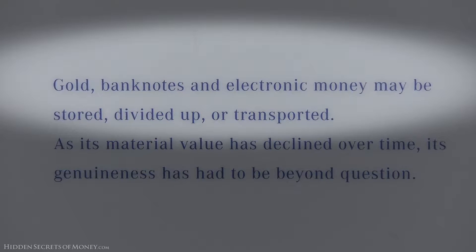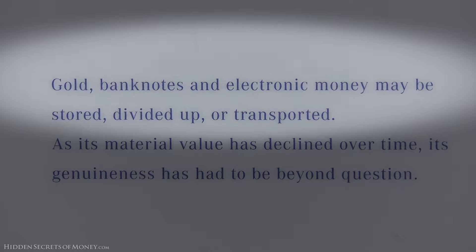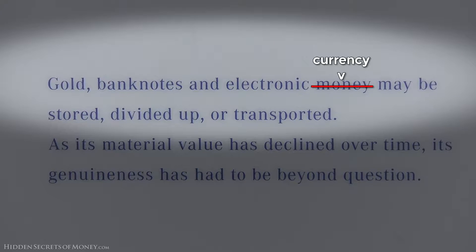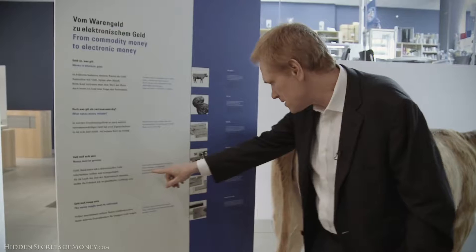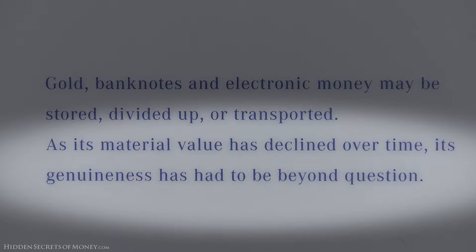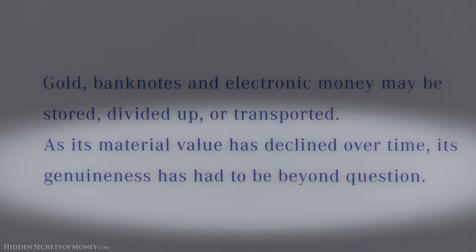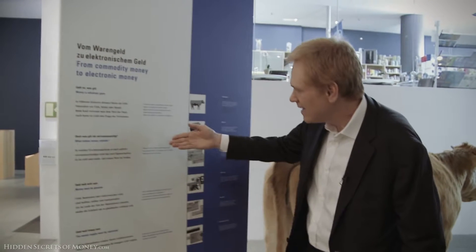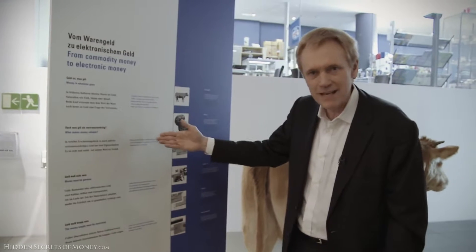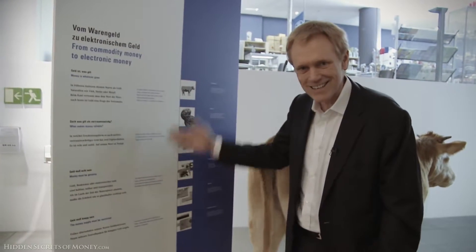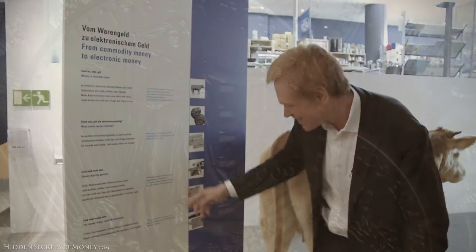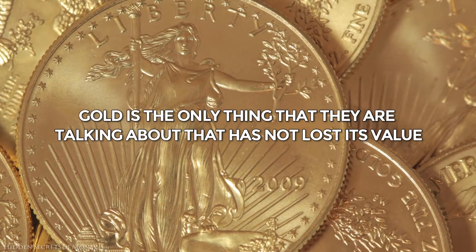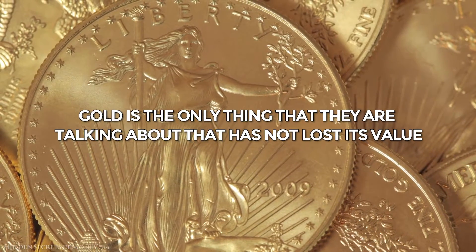Gold, banknotes, and electronic money — meaning electronic currency — may be stored, divided up, or transported. As its material value has declined over time, its genuineness has had to be beyond question. But this display says it's got to maintain its value, and right here they're contradicting the next one. Gold is the only thing they're talking about that has not lost its value.